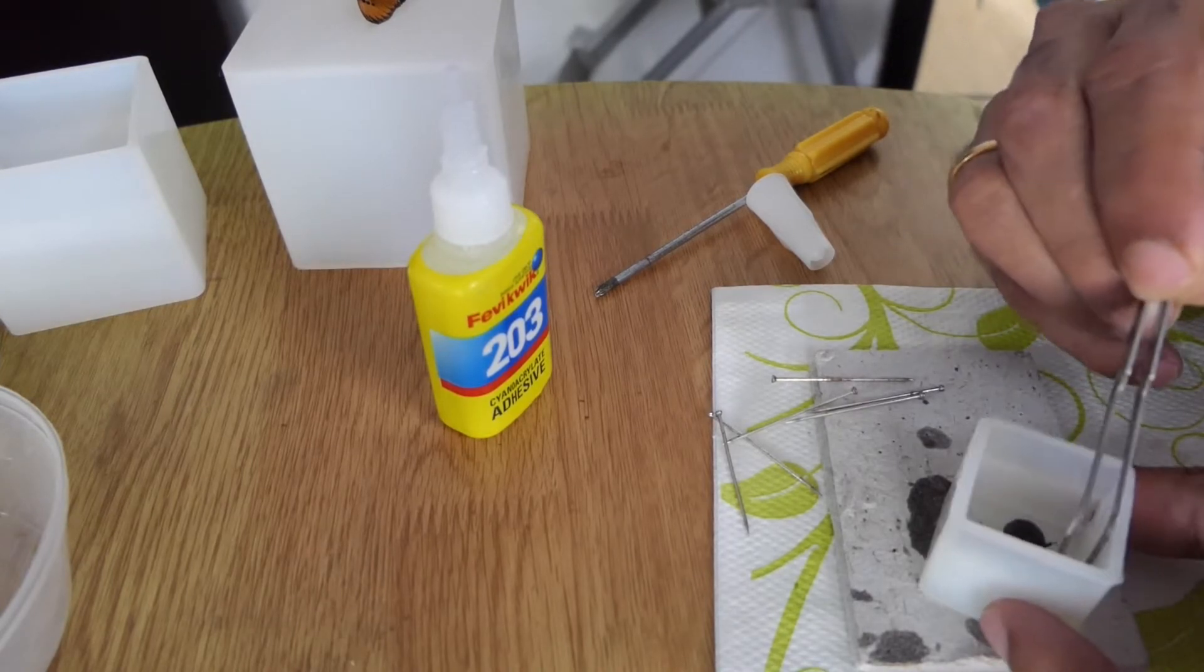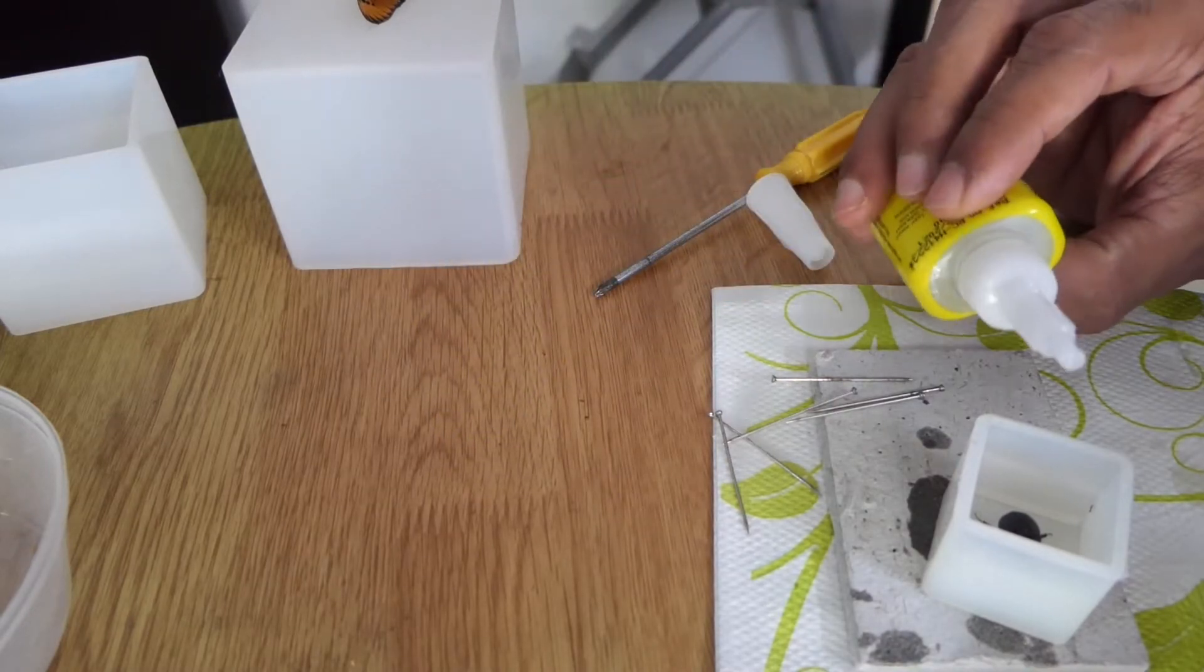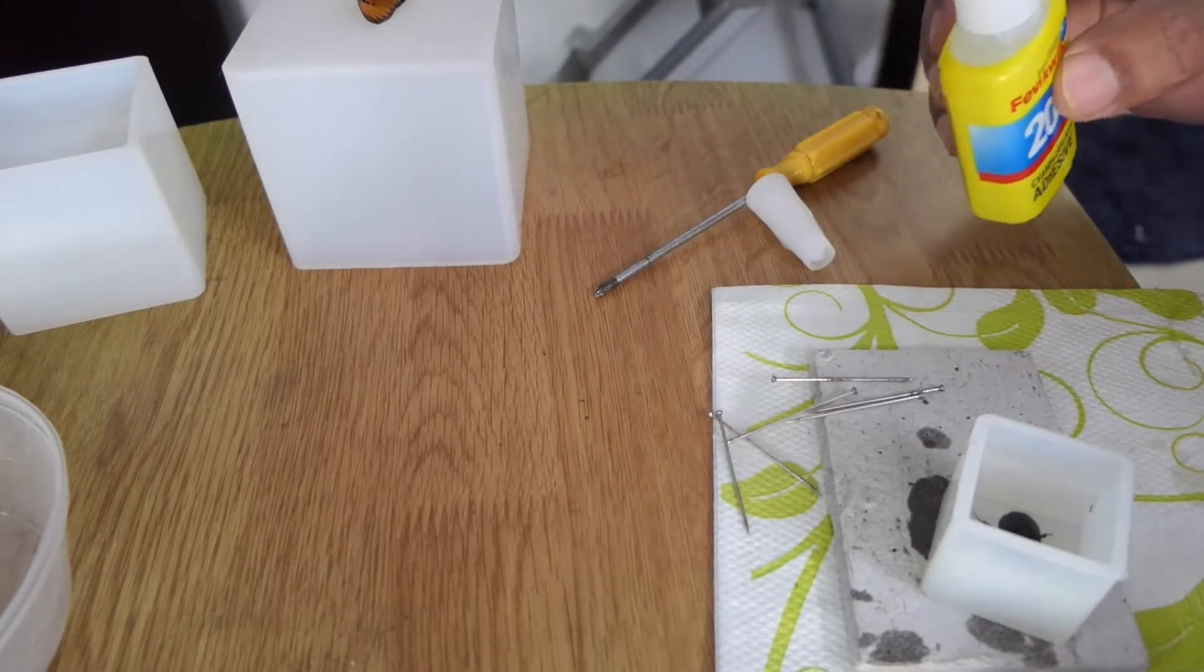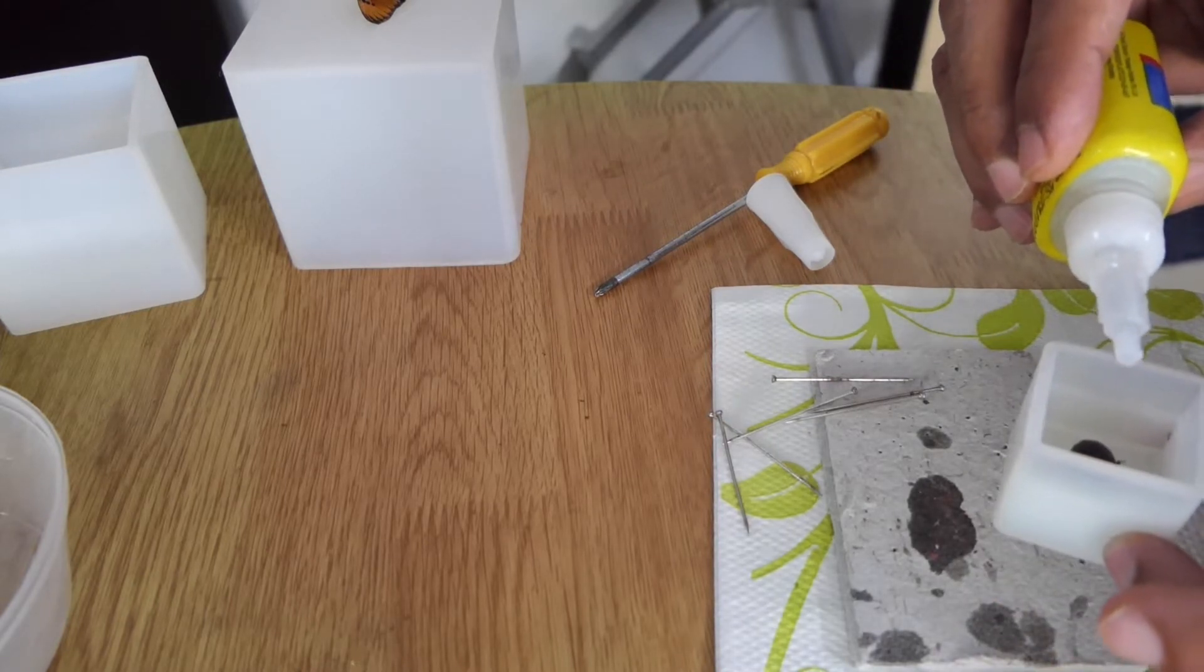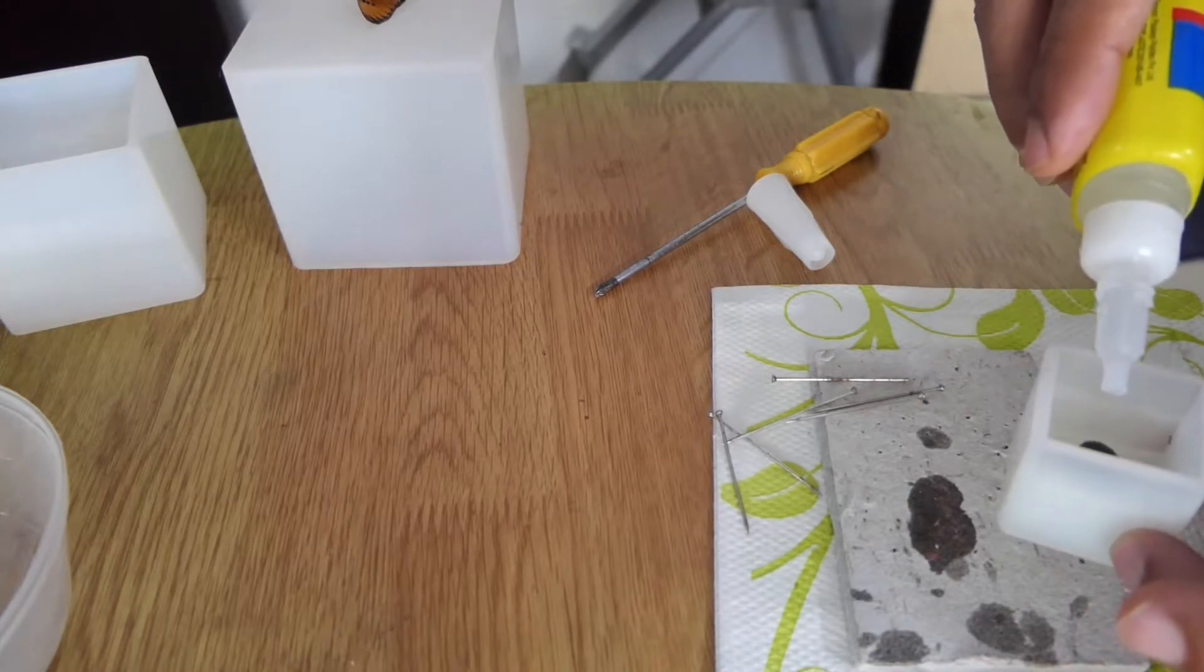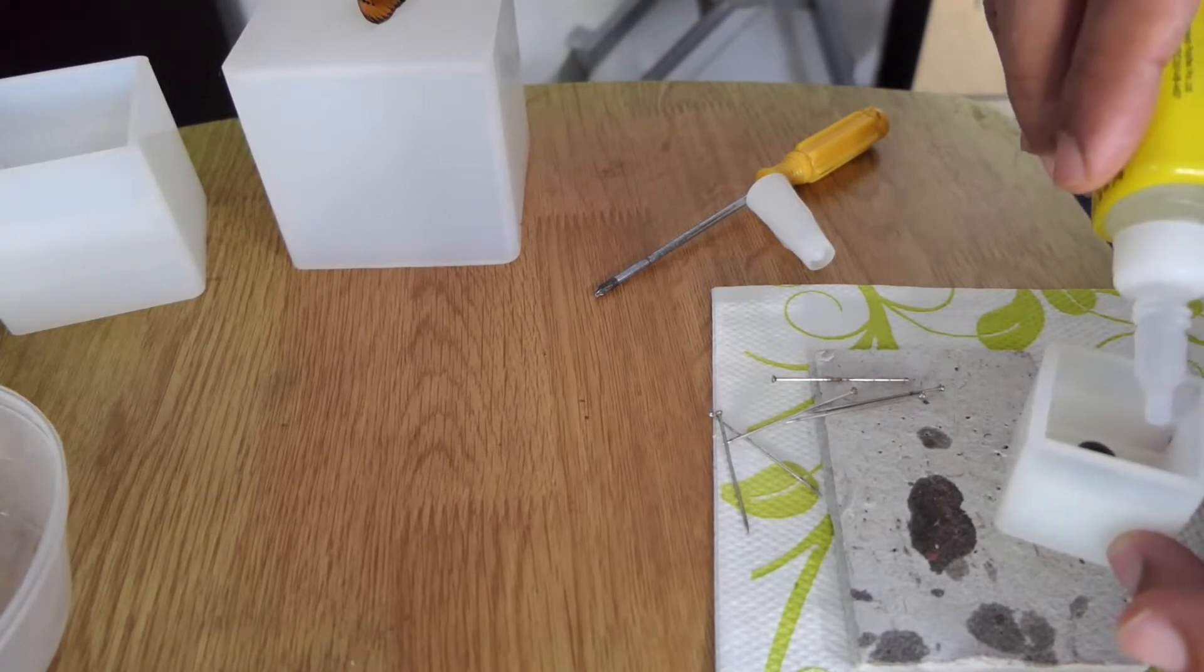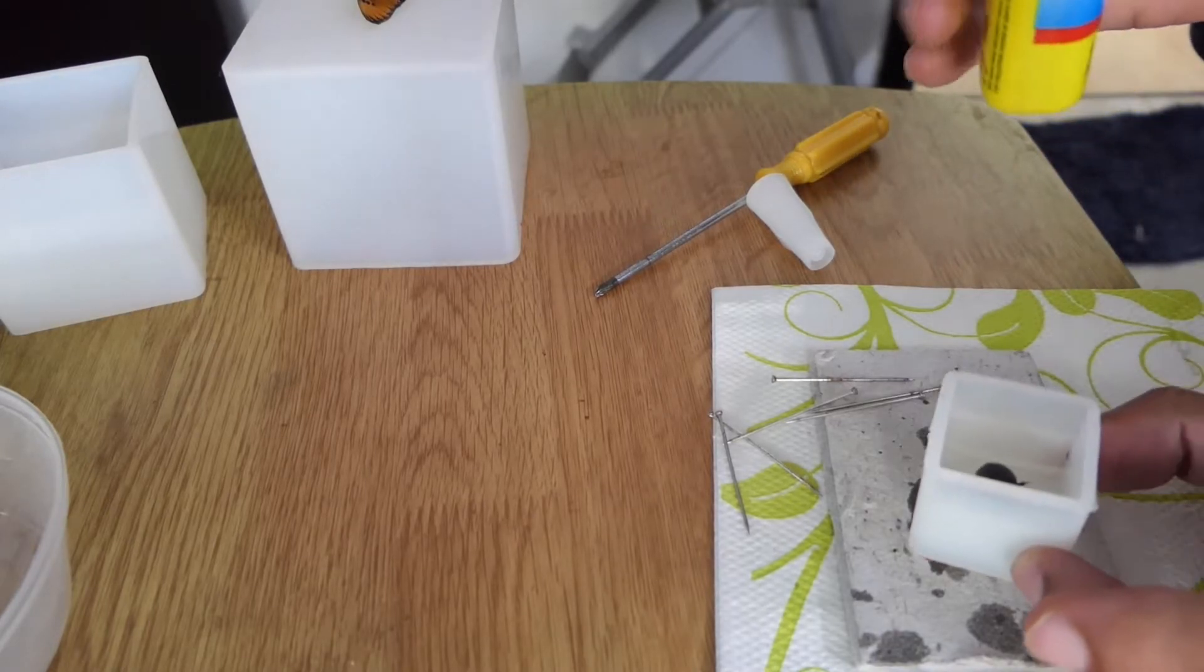Then I had an idea—why not pour a layer of super glue at the bottom and let it remain for some time so that when the glue hardens, it will get stuck to the bottom?